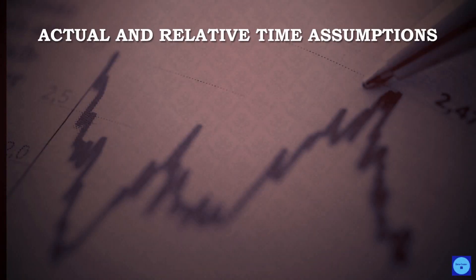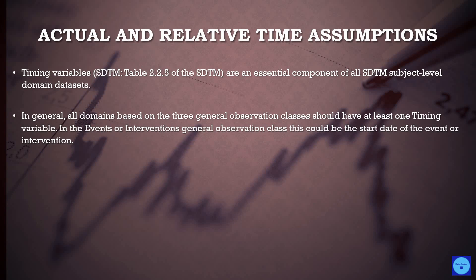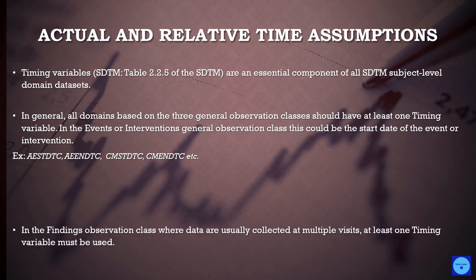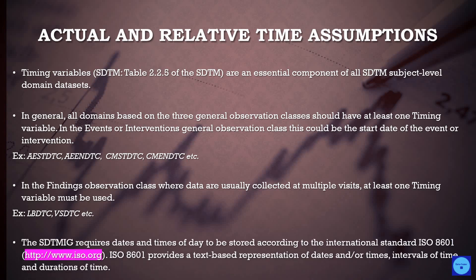Actual and relative timing variables in SDTM are essential components of all SDTM subject-level domain datasets. In general, all domains based on the three general observation classes should have at least one timing variable. In the Events or Interventions observation class this could be the start date or end date — for example, AESTDTC, AEENDTC, CMSTDTC, or CMENDTC. In the Findings observation class, where data are usually collected at multiple visits, at least one timing variable must be used, for example LBDTC or VSDTC.